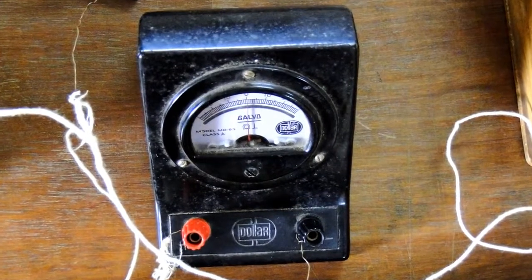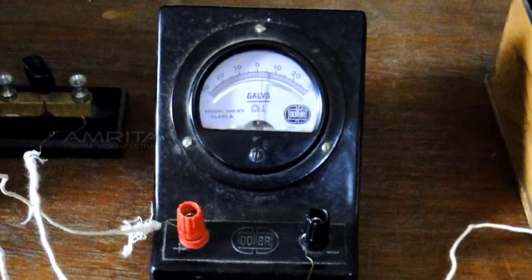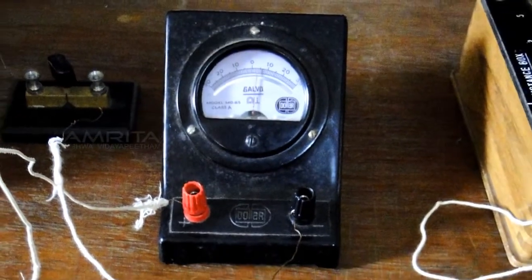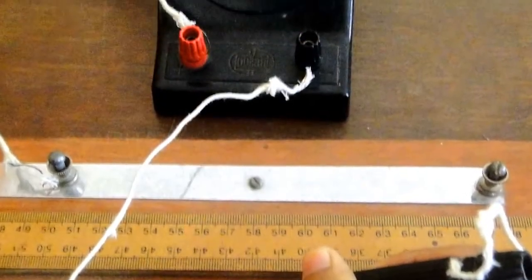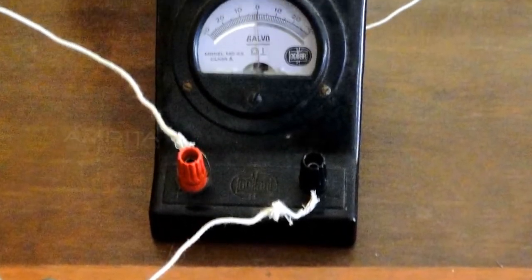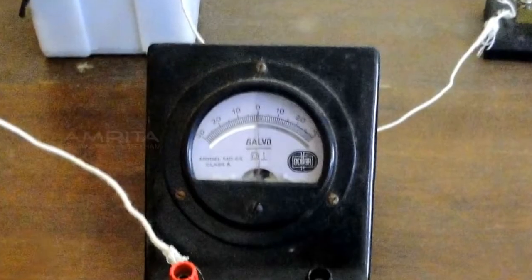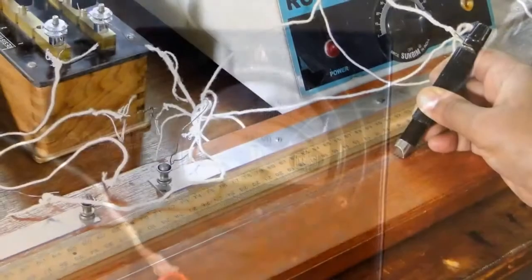The needle of galvanometer will start deflecting to the right side, and when the jockey reaches a particular point of bridge wire, the galvanometer shows a zero reading. This is the balancing point. If the jockey has been moved right to this point, the galvanometer will start deflecting to the right side.